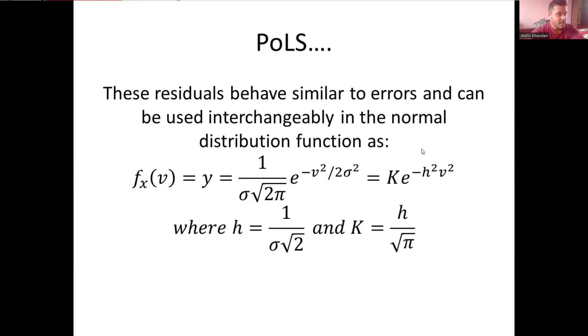We can derive a small kind of this equation, this term, where k is constant for an observation, where k is h divided by root pi, and h is 1 over sigma root 2.